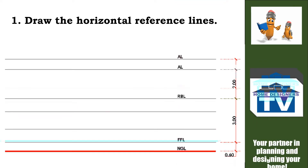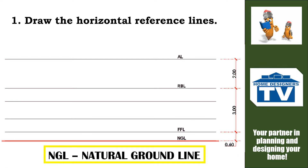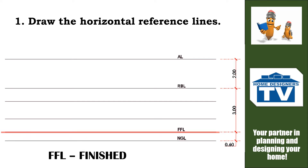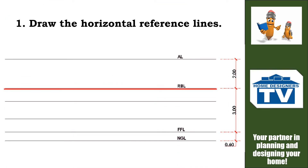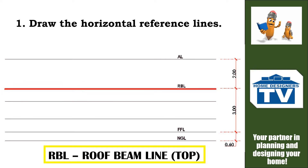Step 1 is to draw the horizontal reference lines. The highlighted line is the NGL or natural ground line. Next is the FFL or the finished floor line. RBL is the roof beam line, specifically the line representing the top of the roof beam. The height of this line from FFL is constant — it is equal to 3 meters, or 3 centimeters in a drawing using scale 1 to 100.